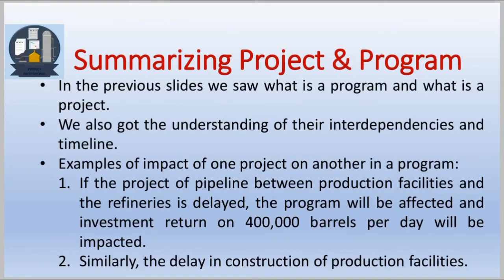Summarizing project and program: in the previous slides we saw what is a program and what is a project, and we got an understanding of the interdependencies and timeline. As an example of the impact of one project on another in a program — if the project of pipeline between production facilities and the refineries is delayed, the program will be affected and the investment return on 400,000 barrels per day will be impacted. Similarly, this is the case for a delay in construction of production facilities.